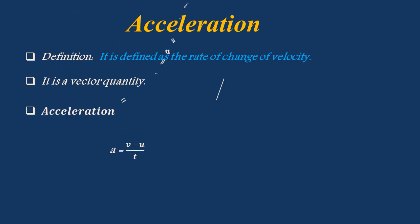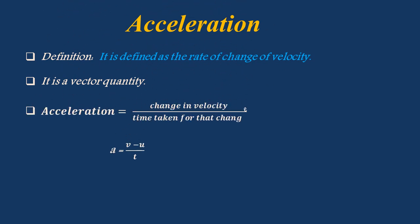Acceleration is expressed as change in velocity divided by time taken for that change. In simple terms, A is equal to V minus U divided by T.